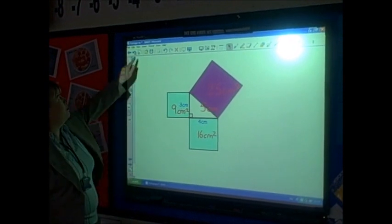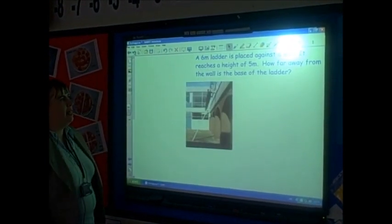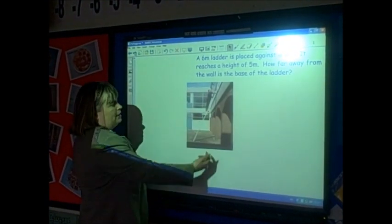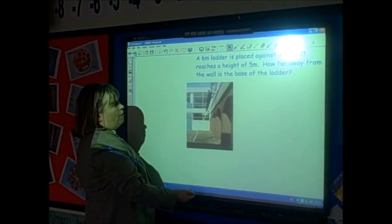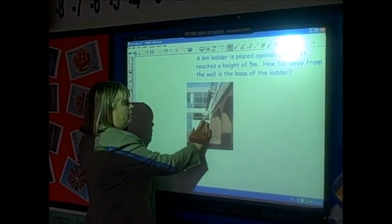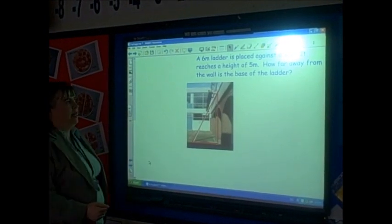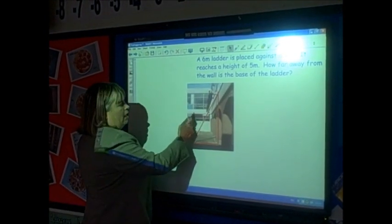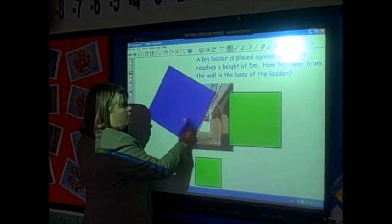So where would I use this? Well, in lots of practical situations. For example, if I have a 6 metre ladder and I place it against a wall 5 metres high, how far away from the wall is the base of the ladder? First of all, I need to recognize where the triangle is within the diagram. I can then put a square onto each side of that triangle.